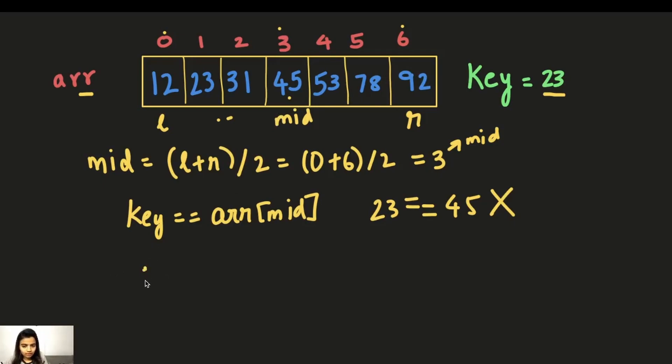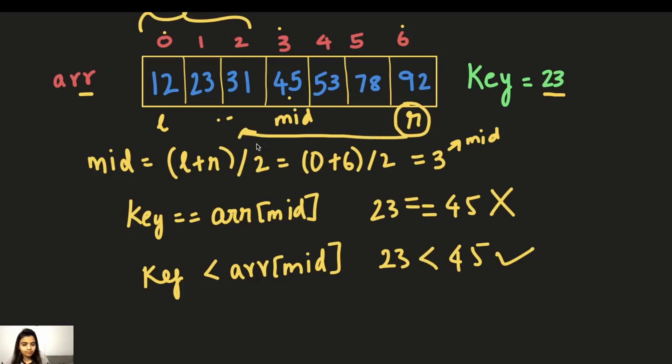So now key is less than array of mid. Key is 23 and array of mid is 45. Is this true? Yes, it's true. So we consider just this part of the subarray. So now how to only pick this part of the array? What I'm going to do is move this right pointer over here, just before the mid. So right will be equal to mid minus 1. Now we pick this part of the array.